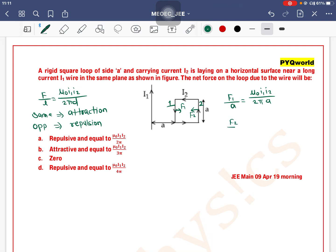F2 per unit length is mu0 I1 I2 divided by 2 pi D, where D is the distance. This distance is 2a, so it becomes 2 pi into 2a.